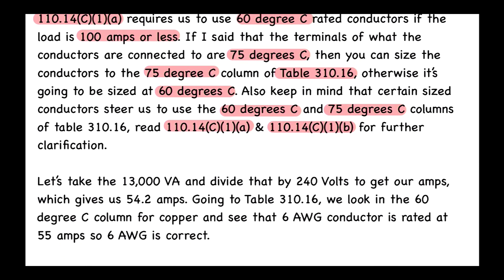We take 13,000 VA and divide by 240 volts to get our amperage: 13,000 ÷ 240 = 54.2 amps. Going to Table 310.16 and looking at the 60°C column for copper, a 6 AWG conductor is rated at 55 amps, which satisfies our 54.2-amp requirement. So 6 AWG is correct.